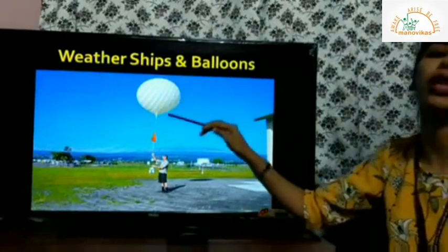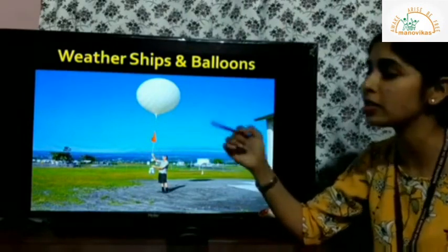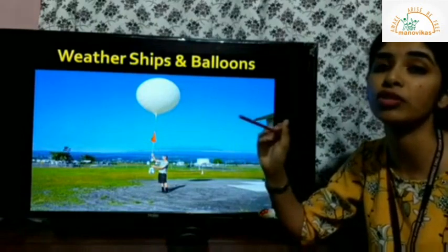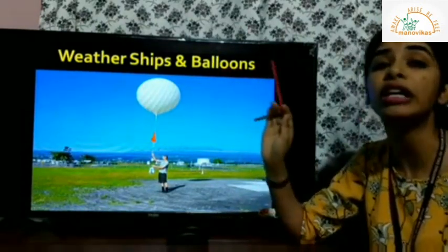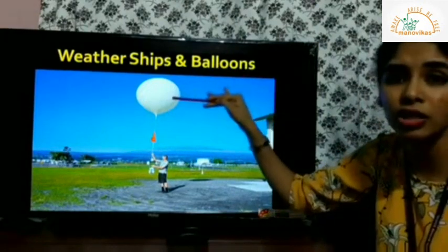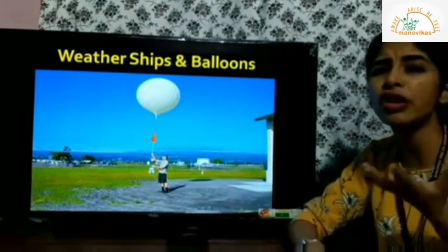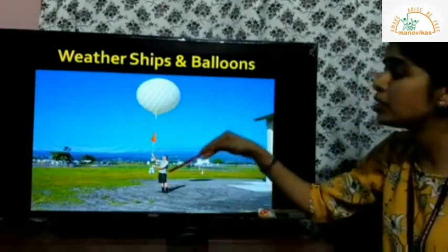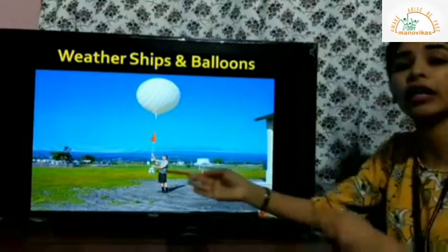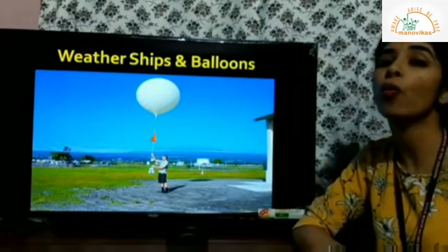A weather balloon is a balloon filled with hydrogen gas, which is a lighter and cheaper gas. At the bottom of the balloon, certain devices are fixed to record atmospheric elements. This is done mostly early in the morning around 3:30 to 4:30. Hydrogen gas is filled in the balloon, light weather data recording instruments are installed at the bottom, and then the balloon is released into the atmosphere. It slowly rises and keeps transmitting data to the ground station.